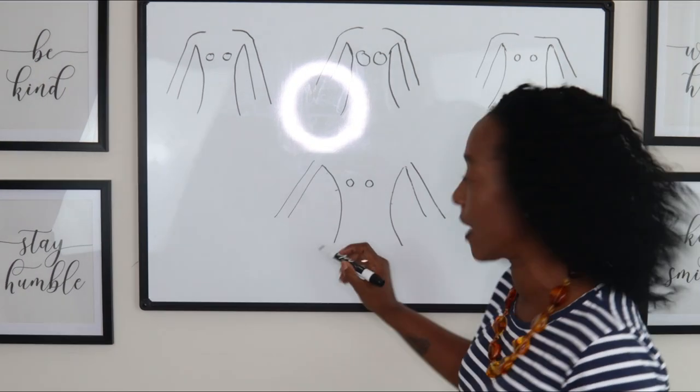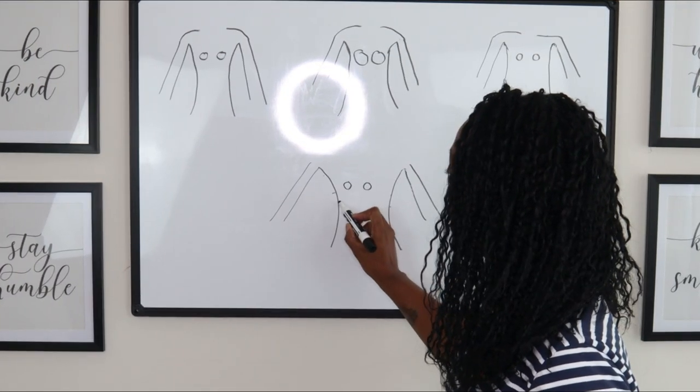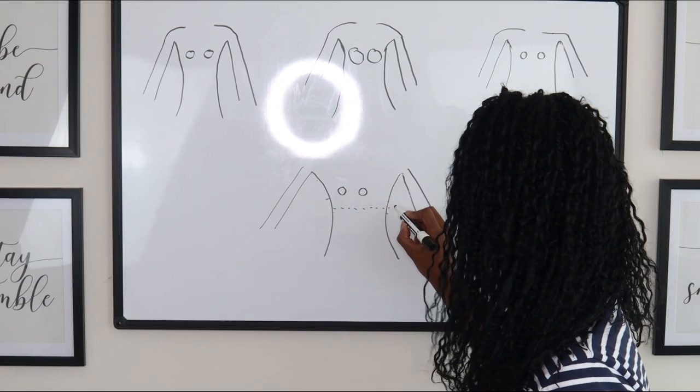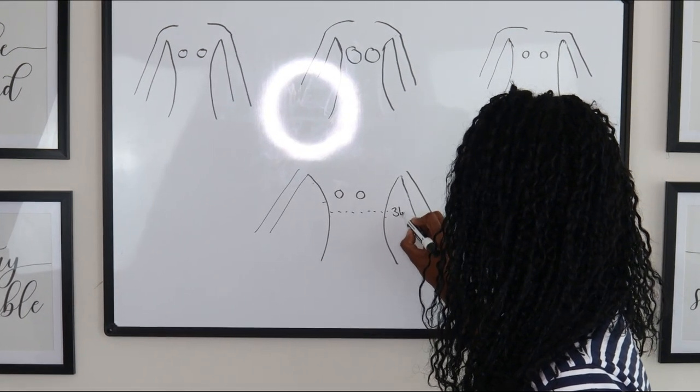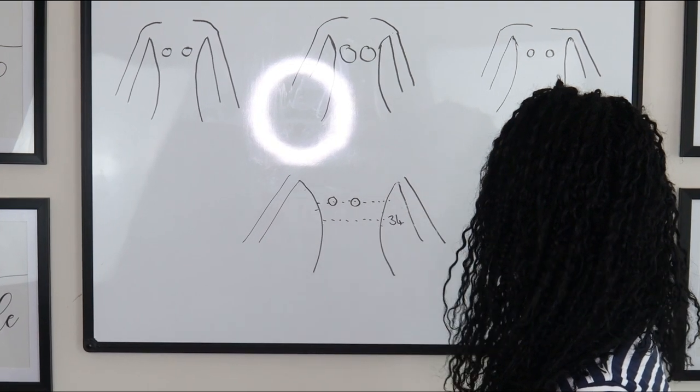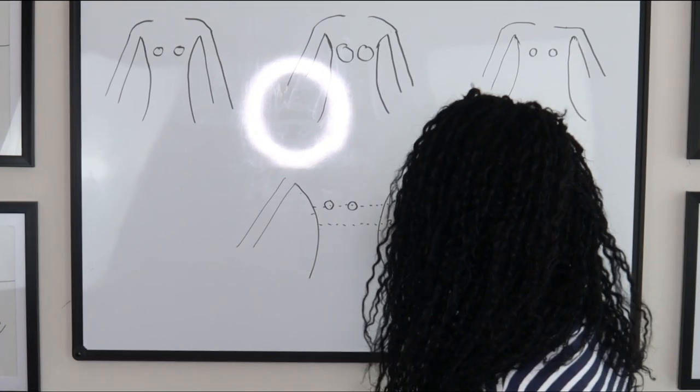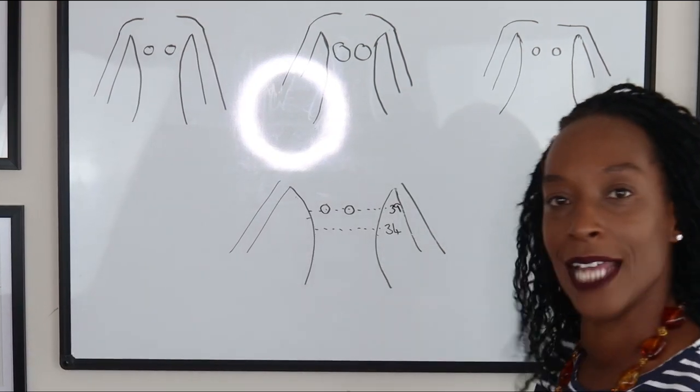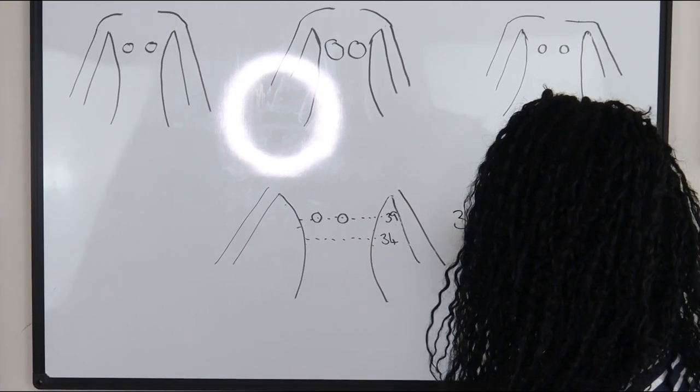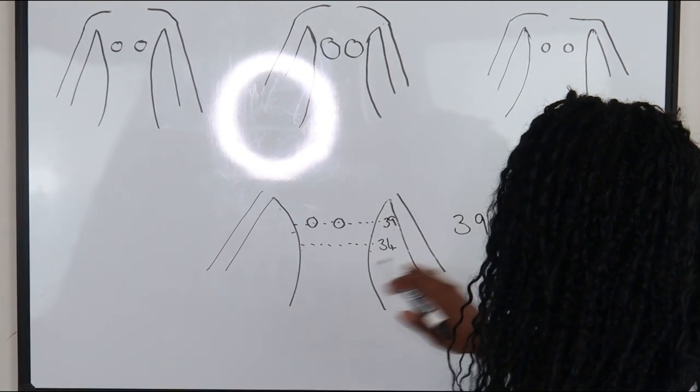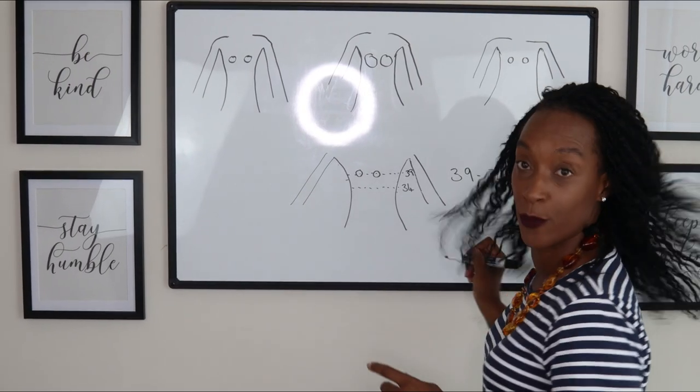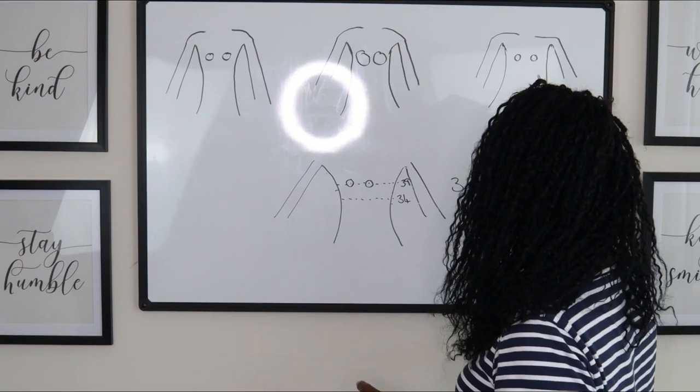To measure bra size, we measure across the rib cage here and we get a measurement which could be 34, and then we measure across the fullest part of the bust and that could be 39. It's the difference between the full breast figure of 39 minus the rib cage 34, which gives us a difference of 5 inches.